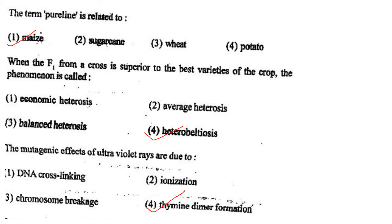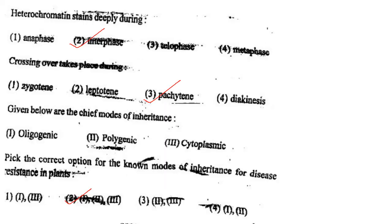Next one: The mutagenic effect of ultraviolet rays is due to option 1, DNA crosslinking; option 2, ionization; option 3, chromosome breakage; option 4, thymine dimer formation. Answer is option 4: thymine dimer formation.